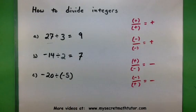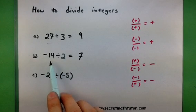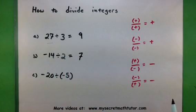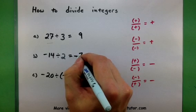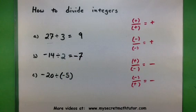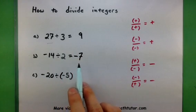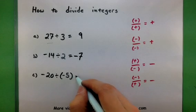Now go back and check your signs. We have a negative 14 divided by a positive 2. That's a lot like this case down here. Negative divided by a positive. It says my answer should be negative. So we're going to go back and fix that 7 and basically make it negative. Negative 14 divided by 2 is a negative 7. Looks great.